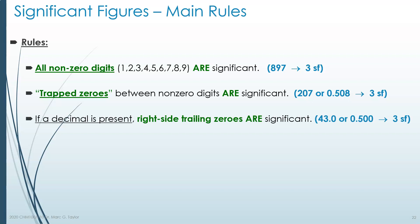If a decimal is present, the right-side trailing zeros — zeros on the right side of a decimal place or to the right of a non-zero digit past the decimal — those will count. So in 43.0, we count that zero because it was important enough to write, and therefore it must have been significant. For 0.500, the leading zero before the decimal is there for looks and is not significant, but all three digits — 5, 0, 0 — are considered significant. If it was important enough to write and you didn't need to write it, it must have been significant.